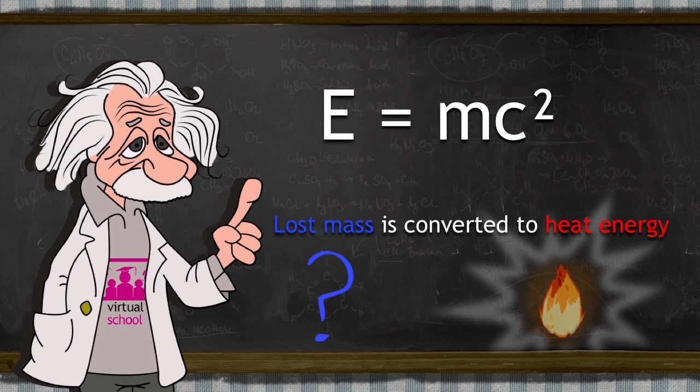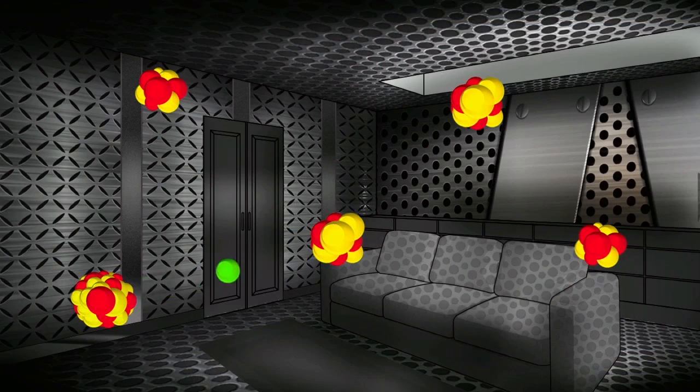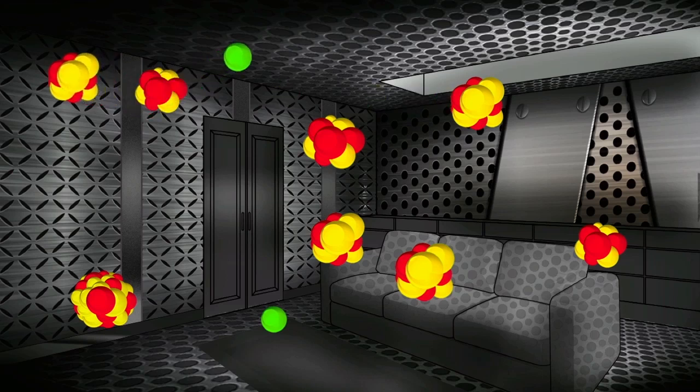But it gets really exciting when you put a bunch of these atoms together. As one atom splits up, it releases some energetic neutrons ready to split up some more atoms, which in turn releases more energetic neutrons, which will split up some more atoms and on and on. This is known as a chain reaction.